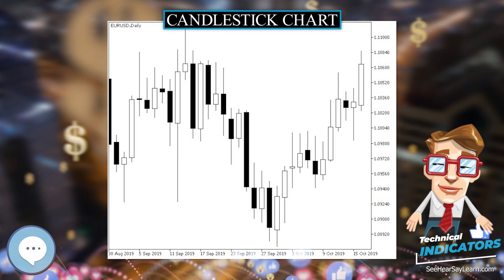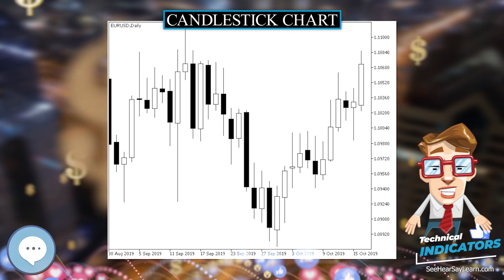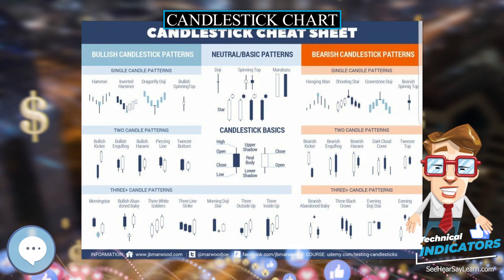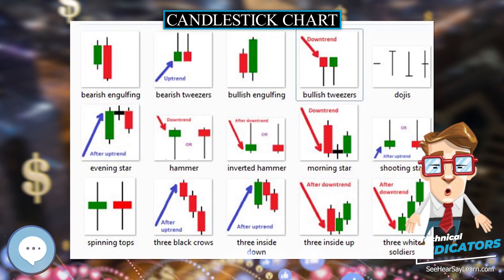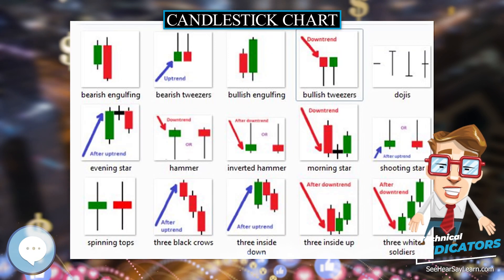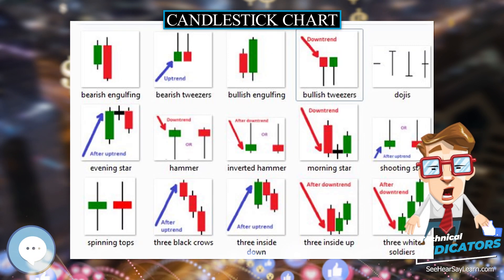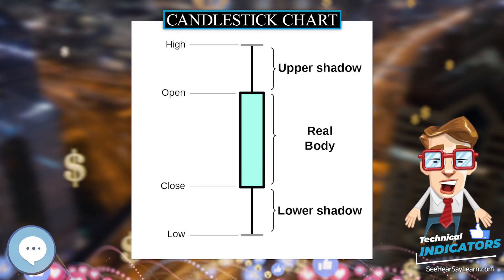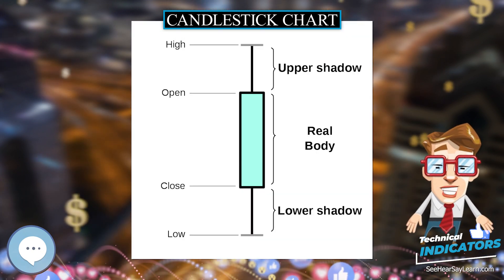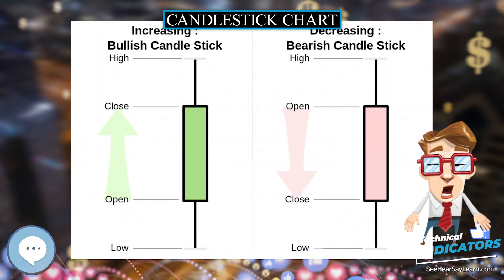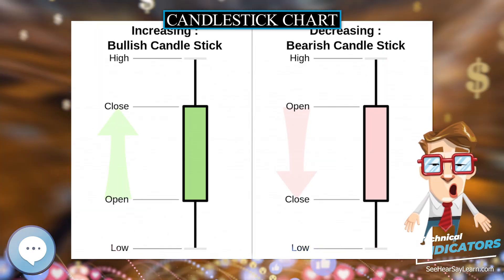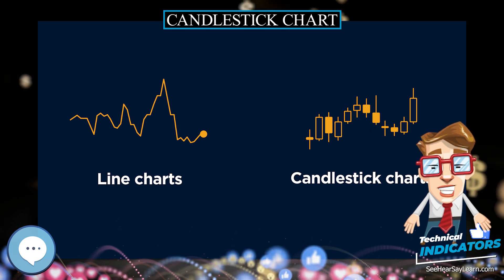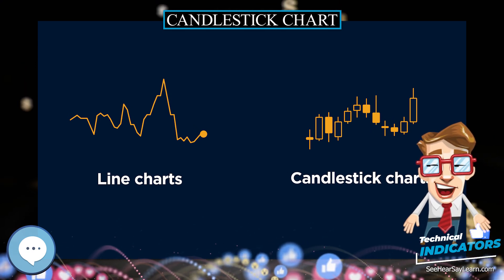A candlestick chart, also called a Japanese candlestick chart, is a style of financial chart used to describe price movements of a security, derivative, or currency. Each candlestick typically shows one day, thus a one-month chart may show the 20 trading days as 20 candlesticks. Candlestick charts can also be built using intervals shorter or longer than one day.